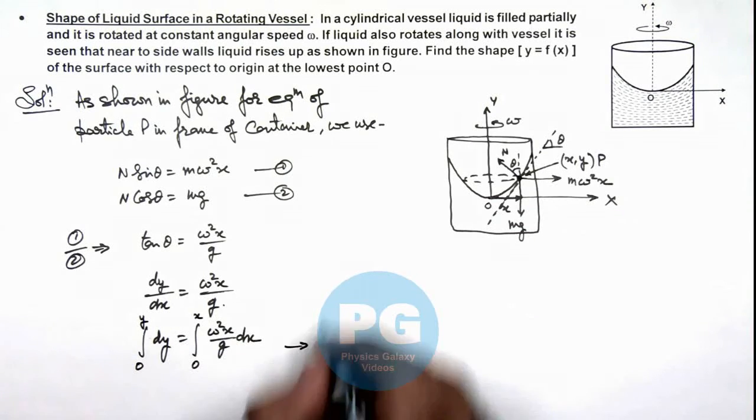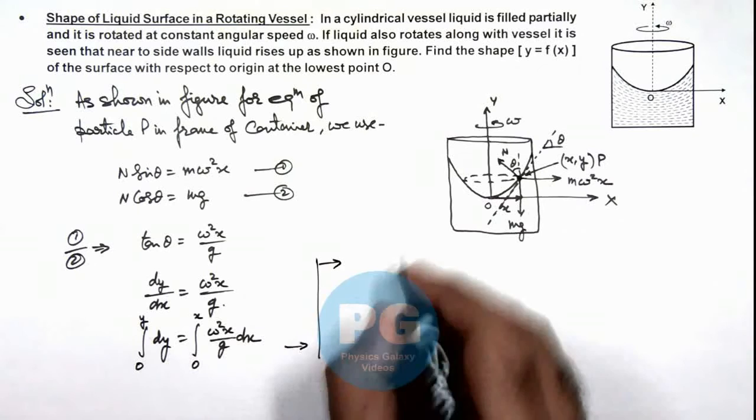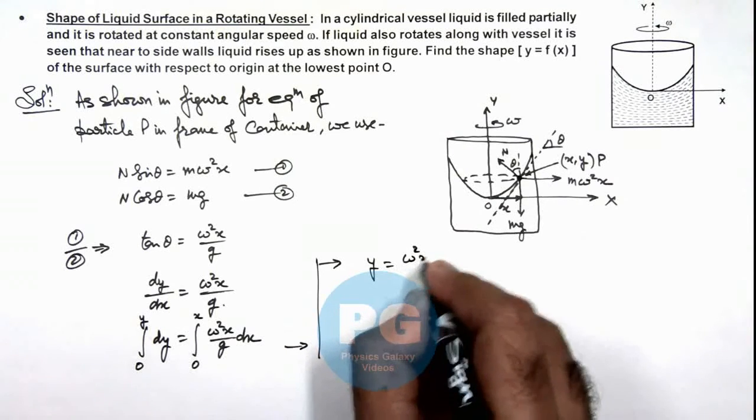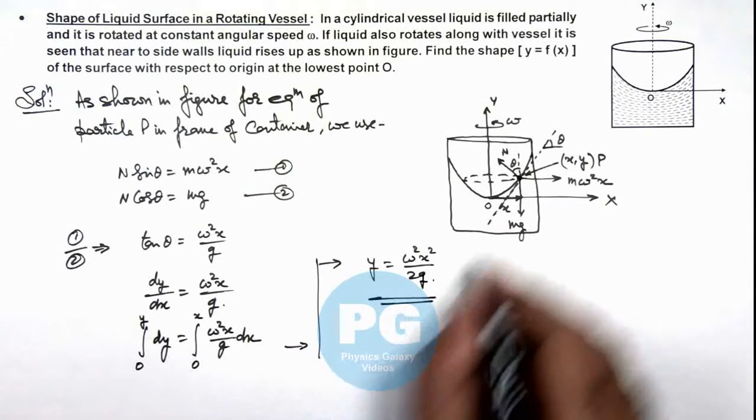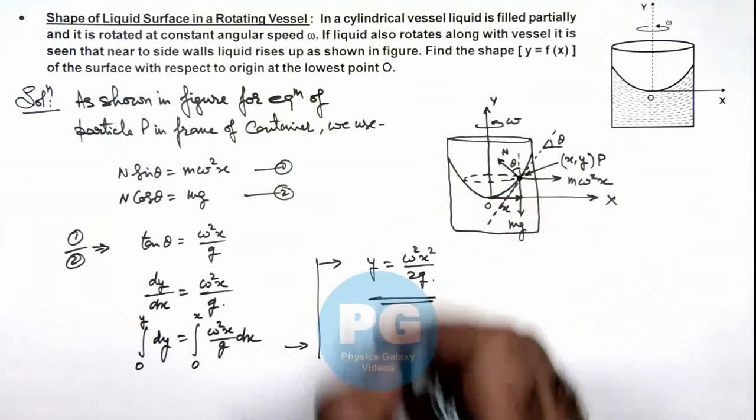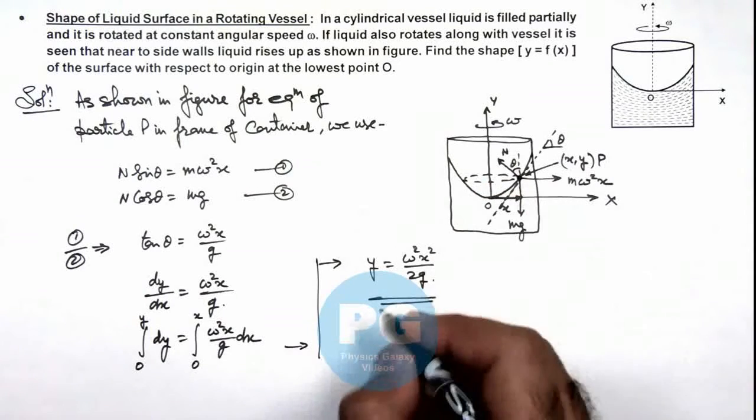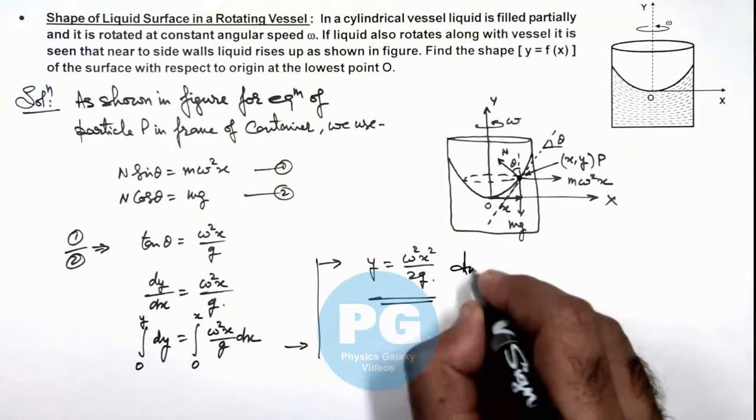So this will result as the integration y = omega^2*x^2/(2g). That is the equation of the shape of the curve obtained due to rotation of this fluid. That is the result of this problem.